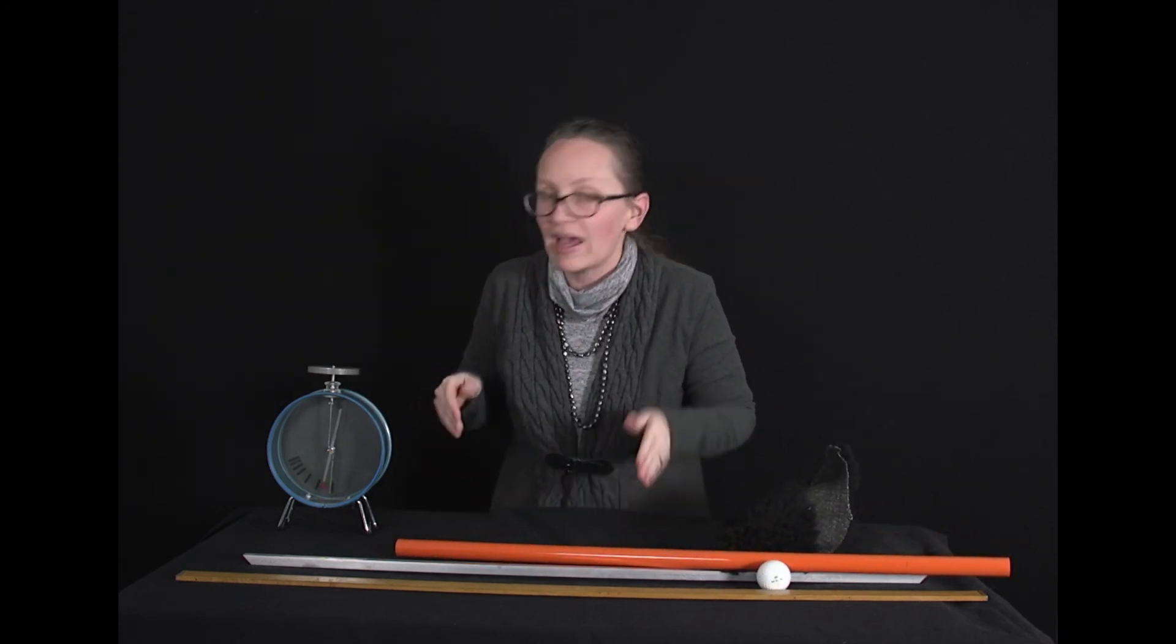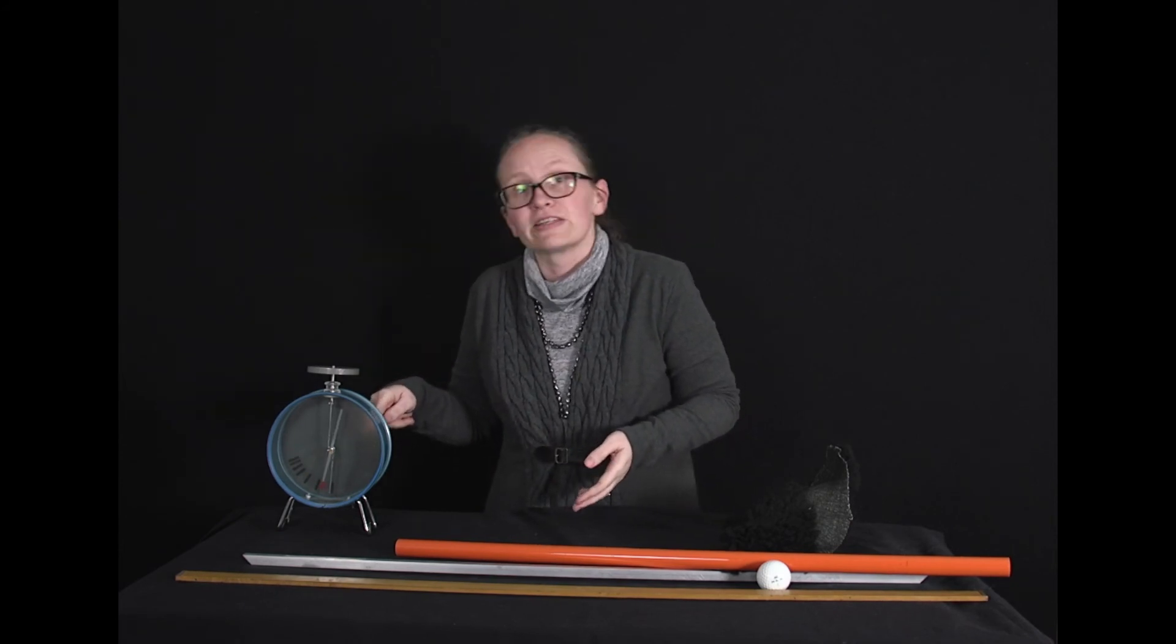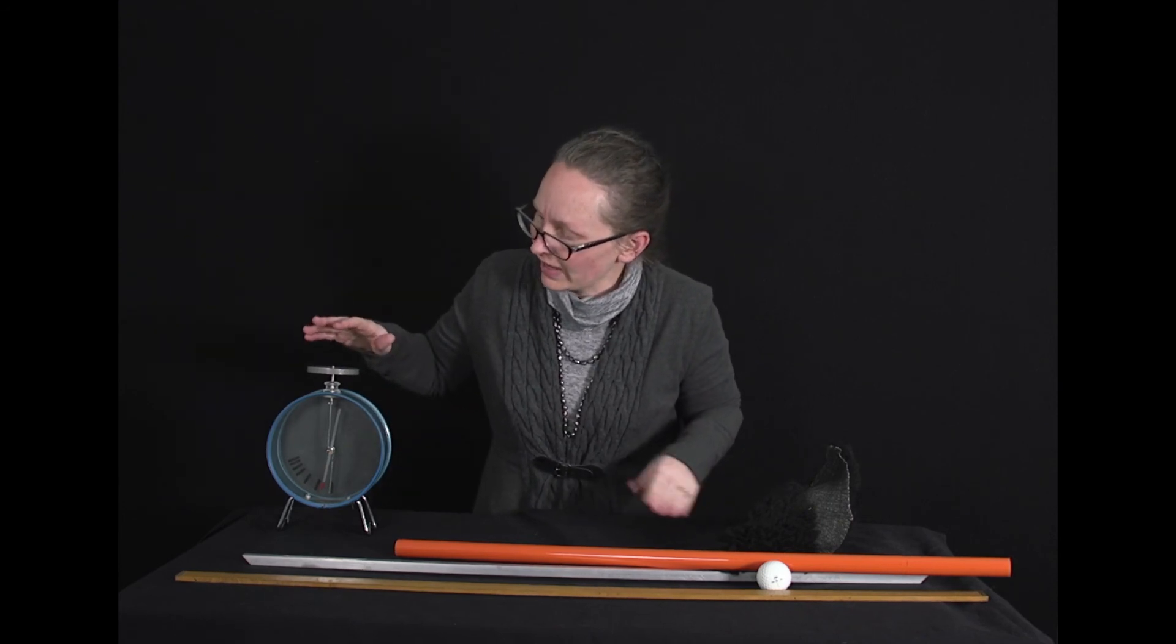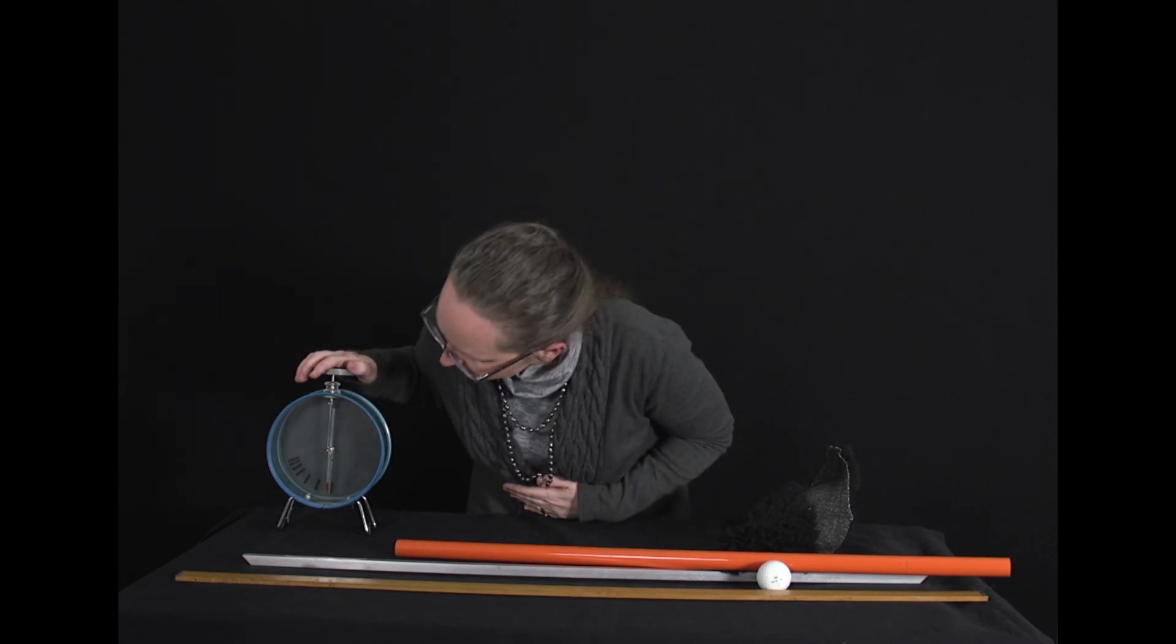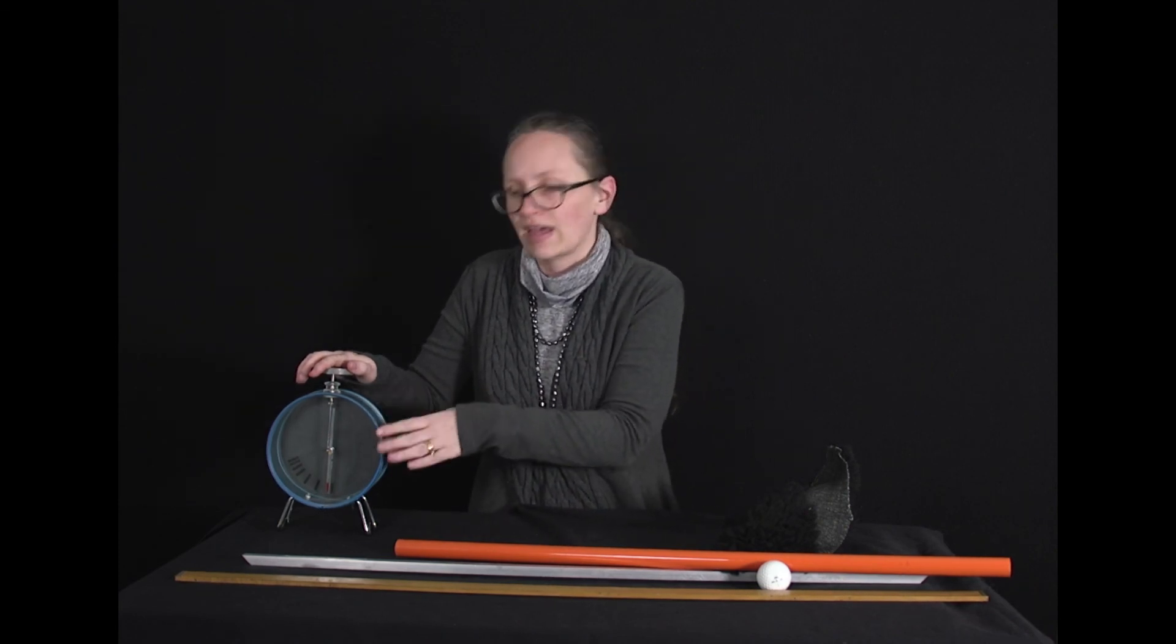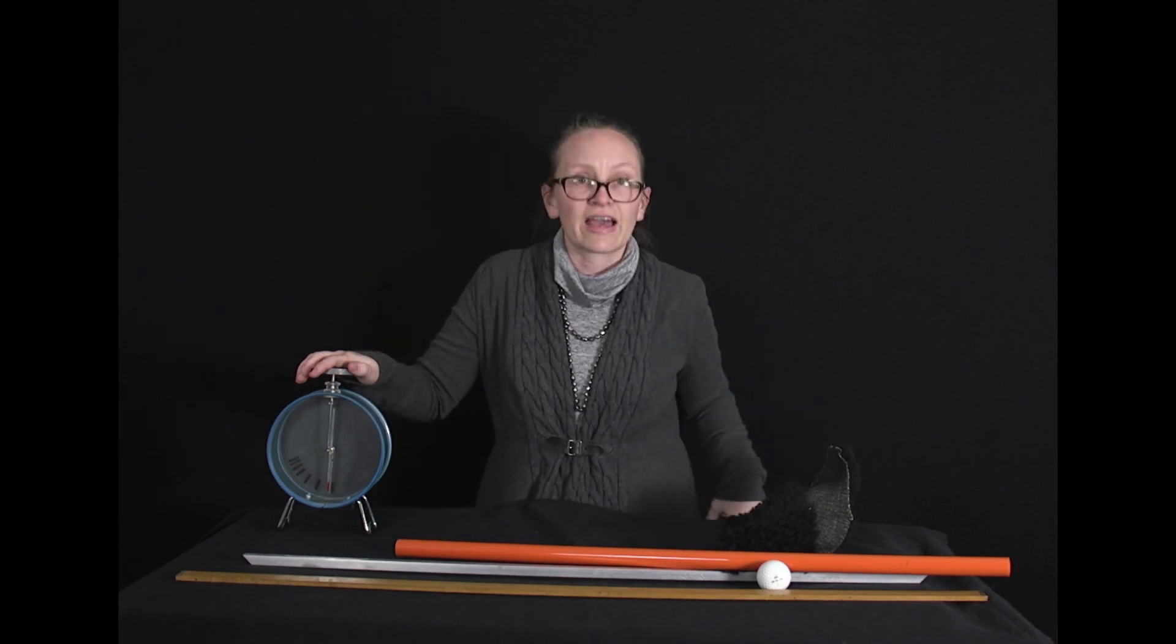You can see the needle hasn't quite returned to the vertical. So there's a little bit of residual negative charge left over, which I can neutralize by touching it. If I touch it, the excess electrons can leave the needle and travel through my hand down to the floor. So this is all neutral.